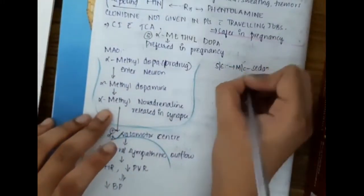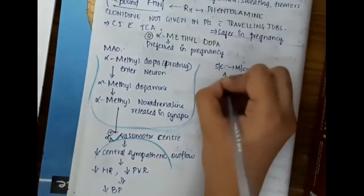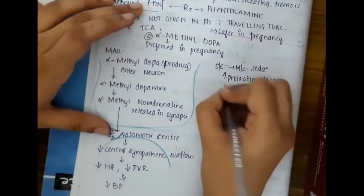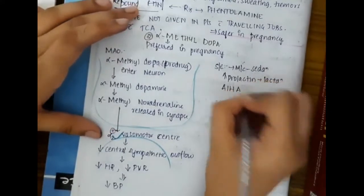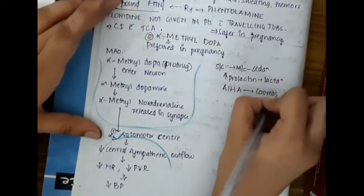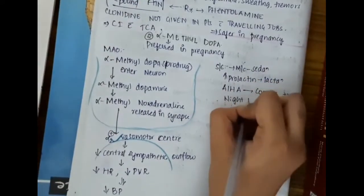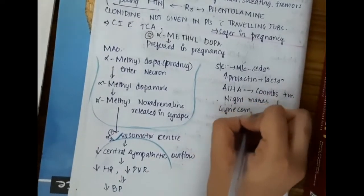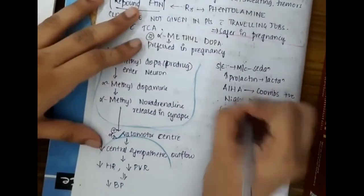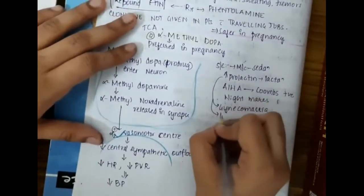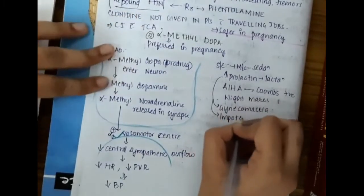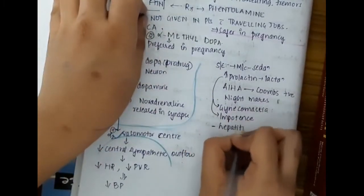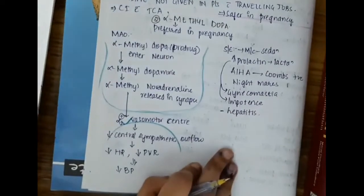The most common side effect of alpha-methyldopa is sedation. It also increases prolactin secretion, causing lactation. It causes Coombs-positive autoimmune hemolytic anemia as a side effect, and also causes nightmares, gynecomastia, impotence, and hepatitis.